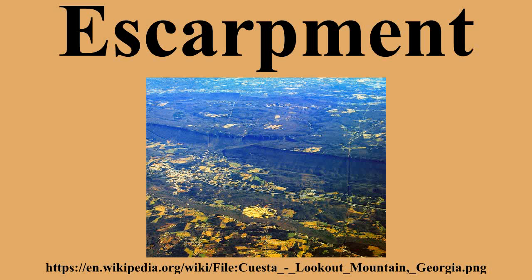Escarpments are believed to occur on other planets when the crust contracts as a result of cooling, on other solar system bodies such as Mercury, Mars, and the Moon. The Latin term rupesh is used for an escarpment.